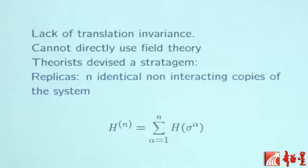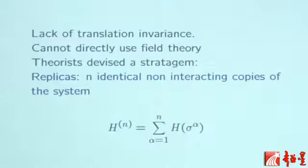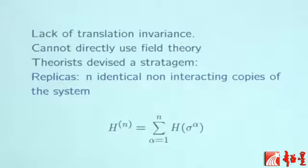In this model, because for example in the random field we have a different field on each site, or in the spin glasses the coupling constants are different at different parts of the system, we don't have translation invariance. We don't even know the exact form of the Hamiltonians. We know that it belongs to a certain family, but we cannot apply field theory under those conditions. So theorists have invented a theoretical trick which is called the replicas.